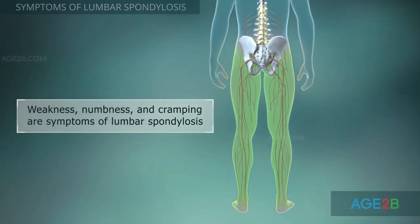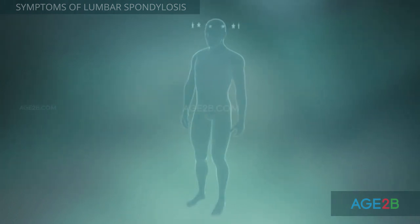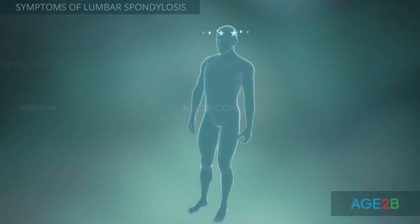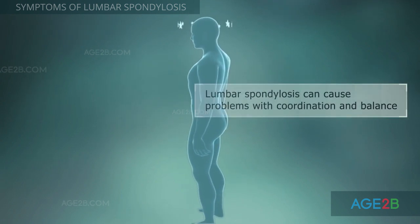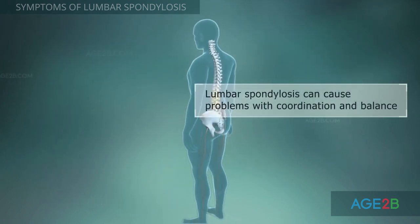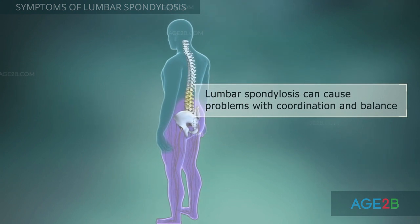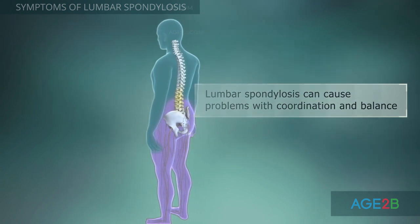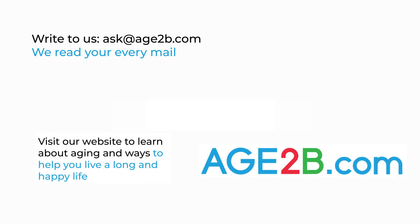These conditions arise due to nerve compression too. In several cases, lumbar spondylosis can cause compression of the spinal cord and the development of lumbar myelopathy. This condition can cause problems with coordination and balance.